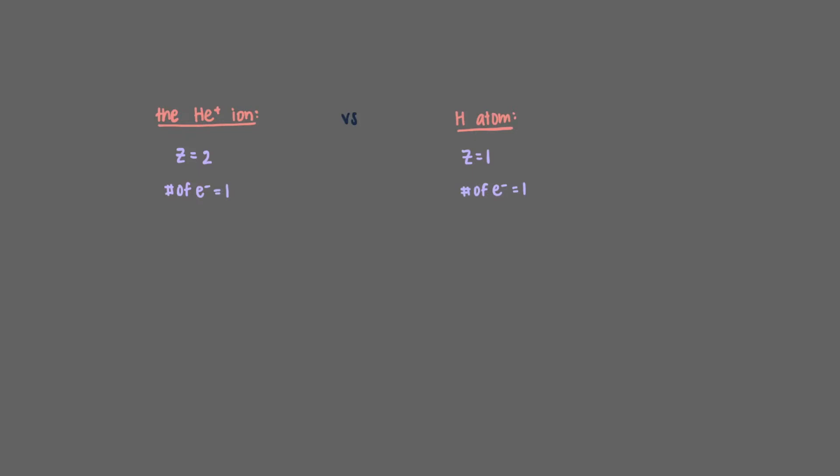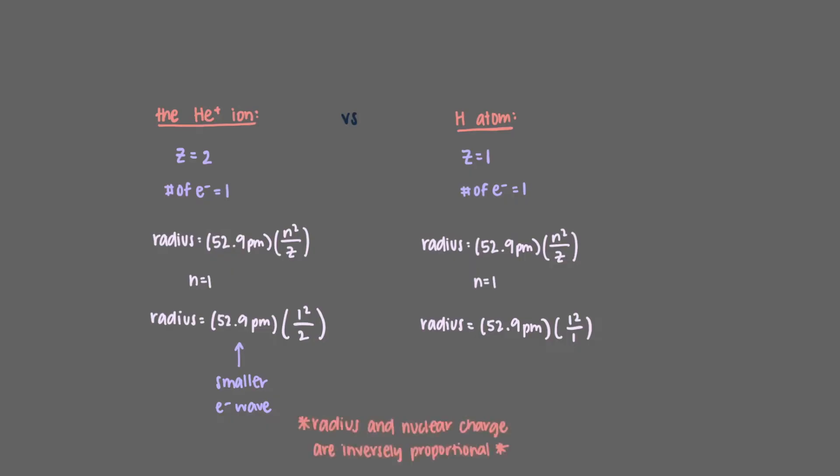Let's recall the Bohr model equation that deals with the radius of a given electron wave. We know that both electrons are 1s, so n equals 1 in both cases. Z, on the other hand, differs because helium and hydrogen have different atomic numbers. So the helium ion's electron wave will be smaller since it has a nuclear charge of 2, and radius and nuclear charge are inversely proportional. Hydrogen then will have the larger electron wave because its nuclear charge is smaller.